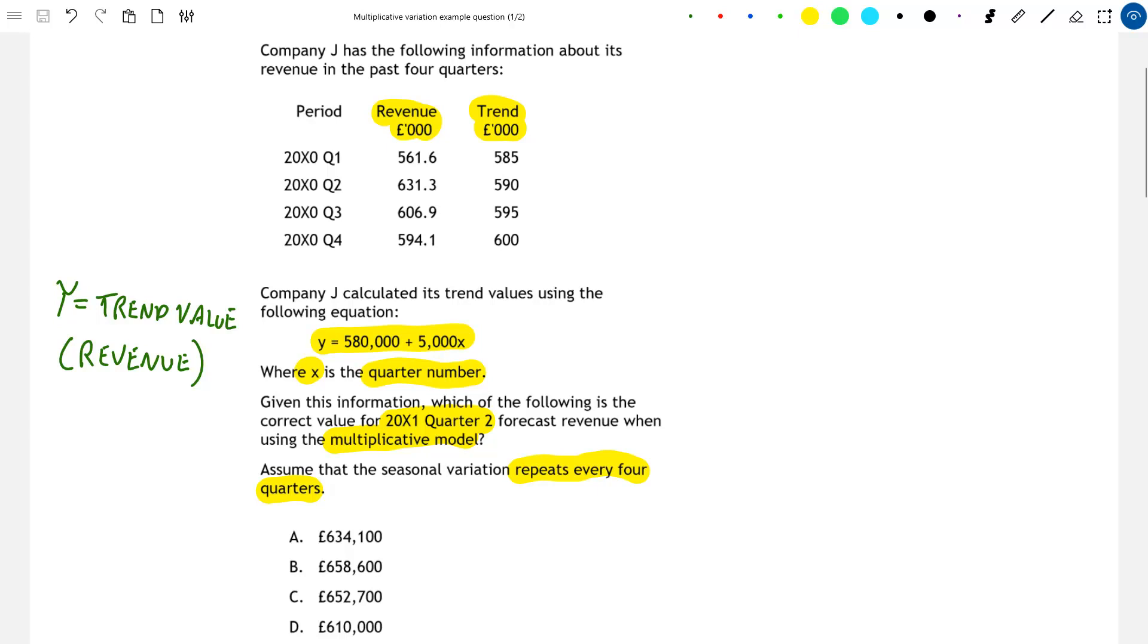So we take our trend value as calculated in this equation and then apply a percentage change to this trend value to make it into an appropriate forecast.